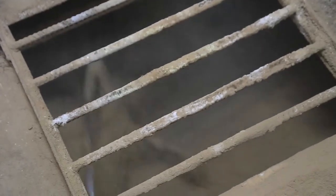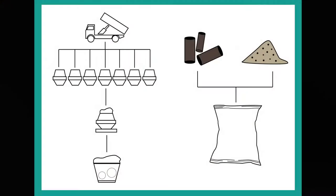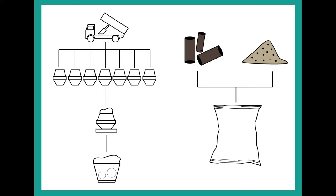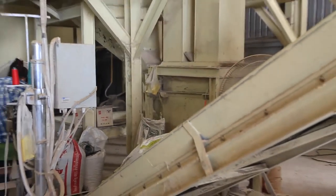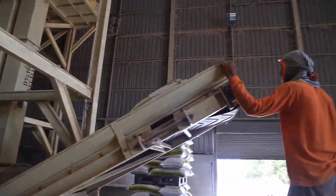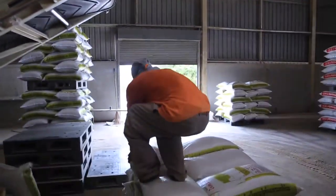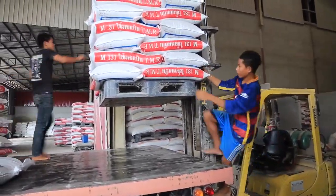After finishing mixing, some of the materials are sent to be compressed as a pallet or left as a powder. This leads to the last and final process — packaging — where substances are sent down from a tube into sacks. The packaging process takes up to 20 seconds per bag.